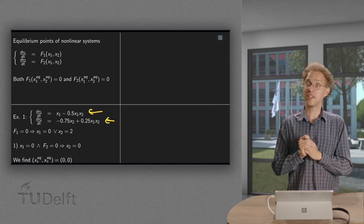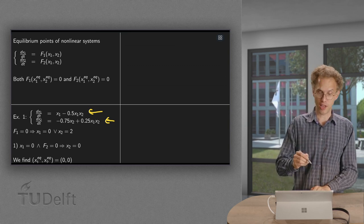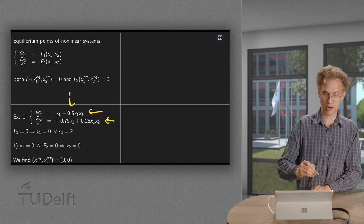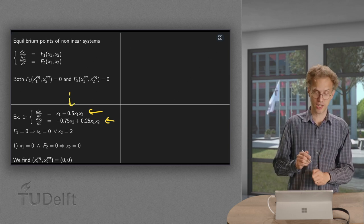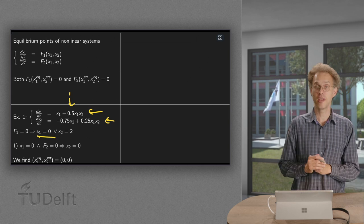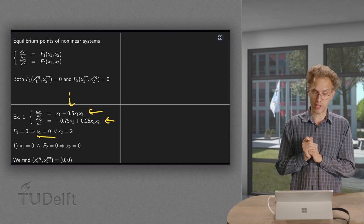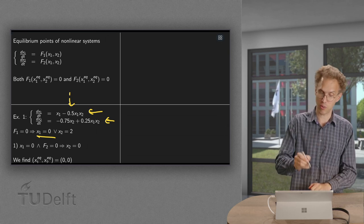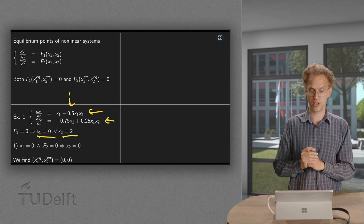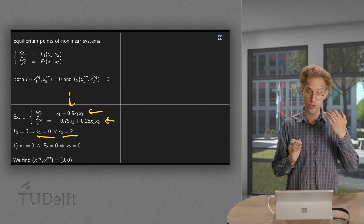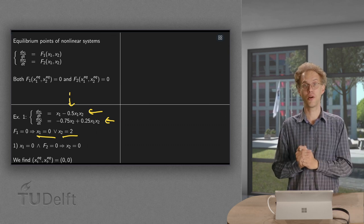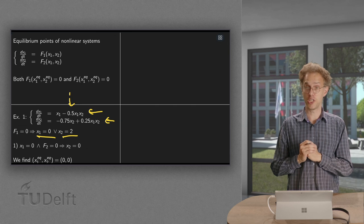Let's take a look at equilibrium points. Well, if f1, this one has to be zero, then we have two options. Either x1 is zero, and if x1 is not zero, we can divide by x1 and we find 1 minus 1.5x2 equals zero or x2 equals two. So we have two options: either x1 is zero or x2 is two.